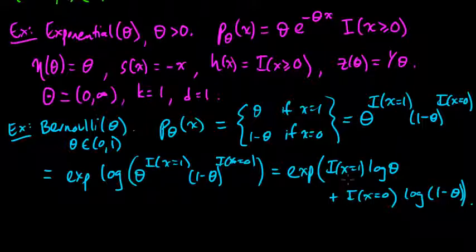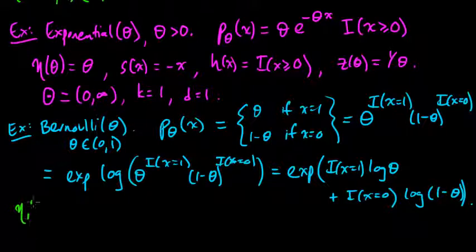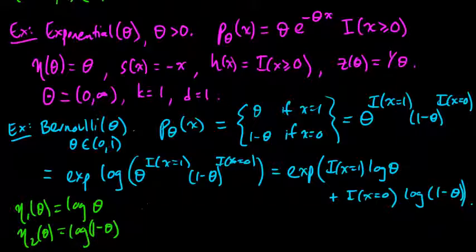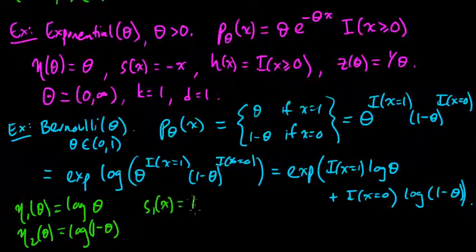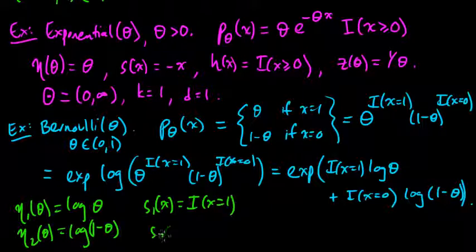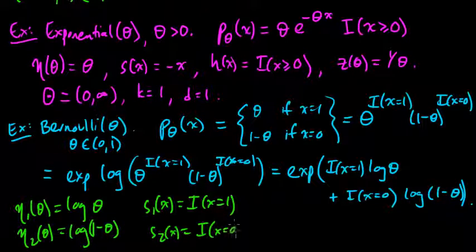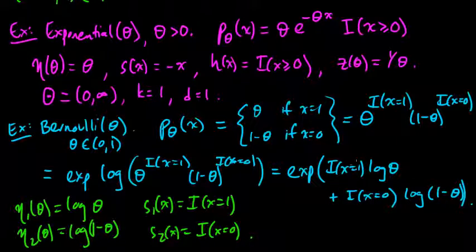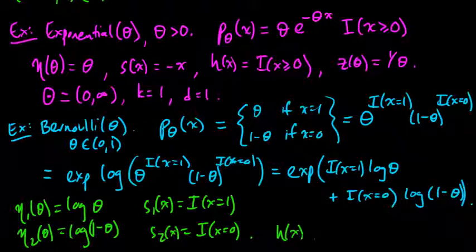So X is some vector in RD, and P sub theta of X equals the exponential function, the same as E to the sum, as I goes from 1 to M for some M, of eta sub I of theta, our parameter, times S sub I, which is also a function of X, times a function H of X. So I'm introducing lots of functions here, and we'll say exactly a little more what these are in a second, divided by another function Z of theta.